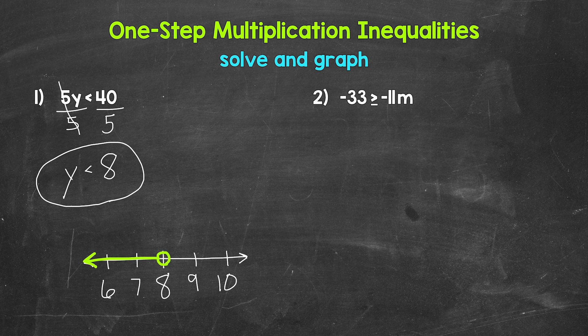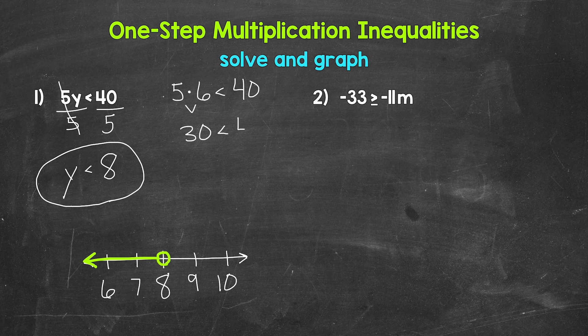One last thing we can do is check a solution. We can plug in anything less than eight for Y and see if it works. Let's use six: five times six is less than 40. Five times six gives us 30, and 30 is less than 40 — so we are correct. Our answer, Y is less than eight, works for any value less than eight.